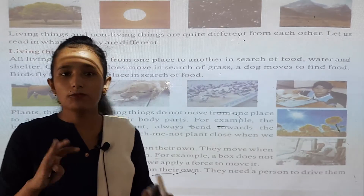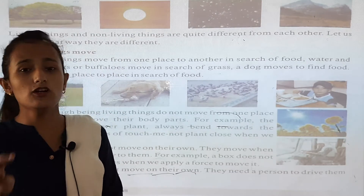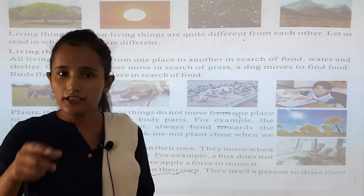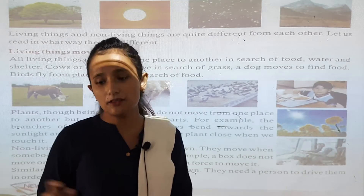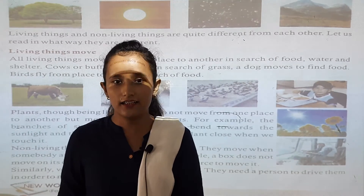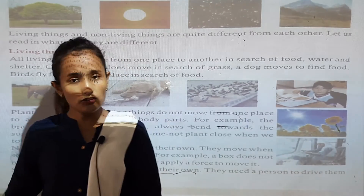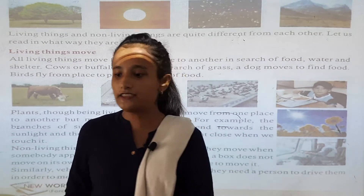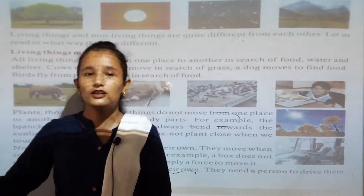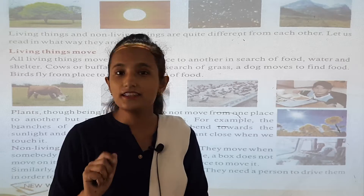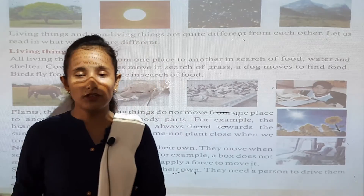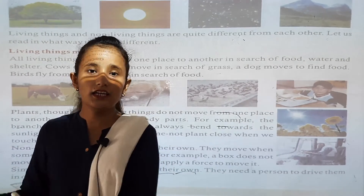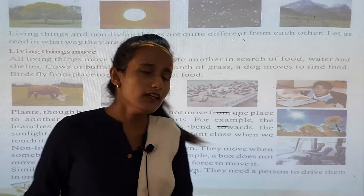For example, if you have a dog at home and you say 'come here,' the puppy understands and comes to you. The dog comes because the dog is a living thing. But if you call a chair — 'come here' — the chair will not come, because it doesn't understand. Chair is a non-living thing.